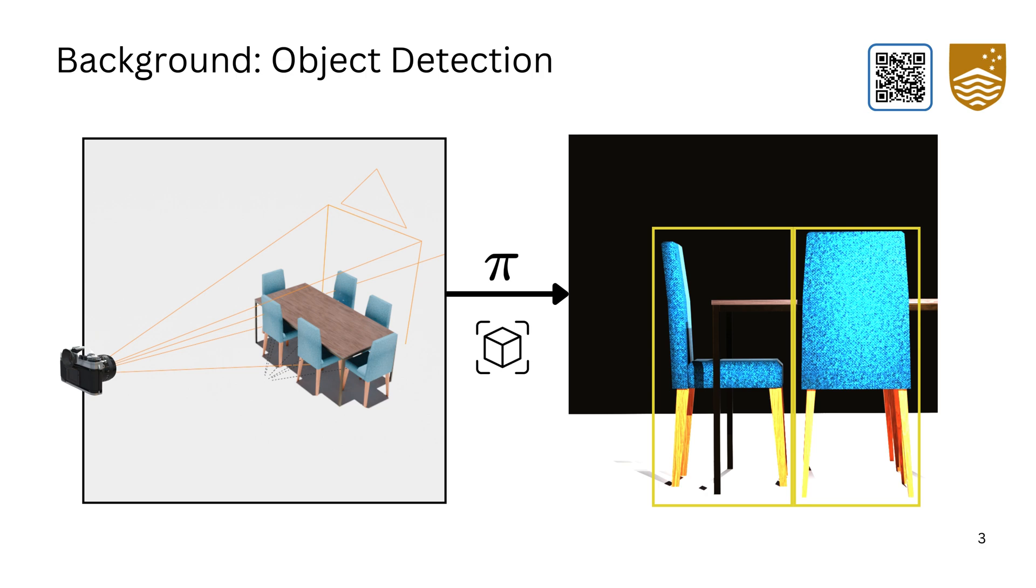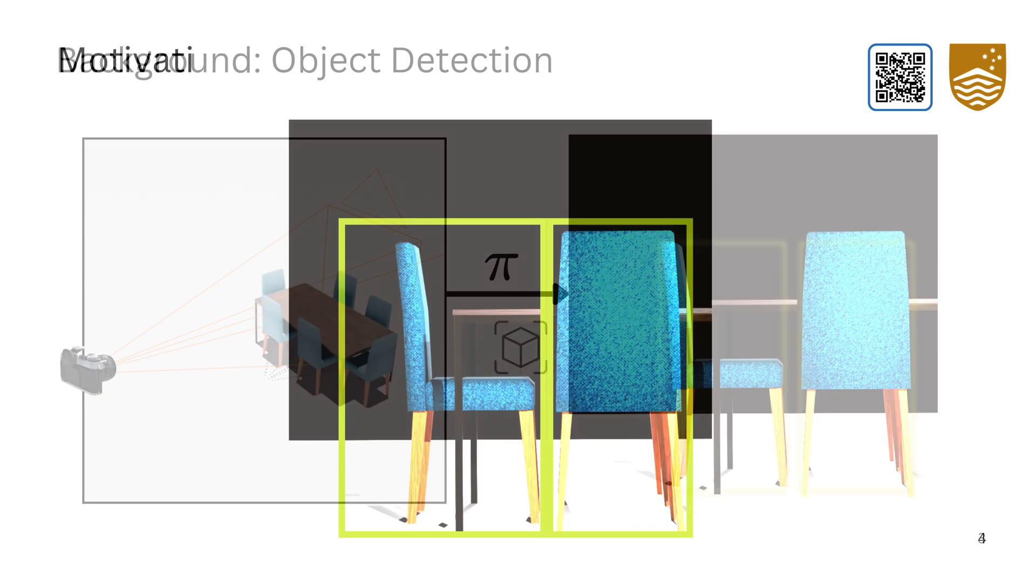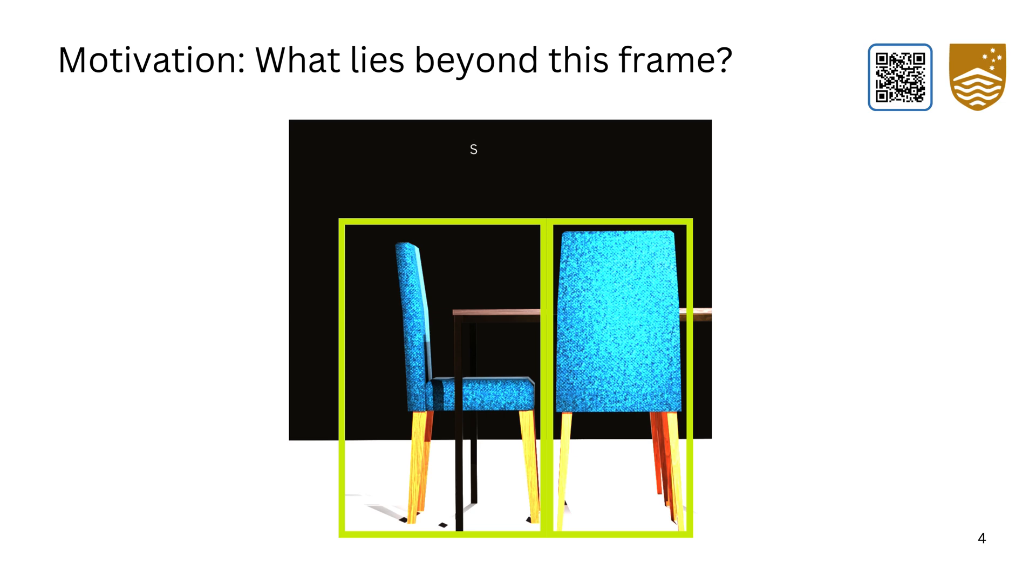However, it fails to reason about objects that may be present in the scene but not in the frame. And this brings us to our motivation. What lies beyond the observable? What can we infer about the regions concealed in a single observation, beyond the field of view or those that are occluded, given this single observation?